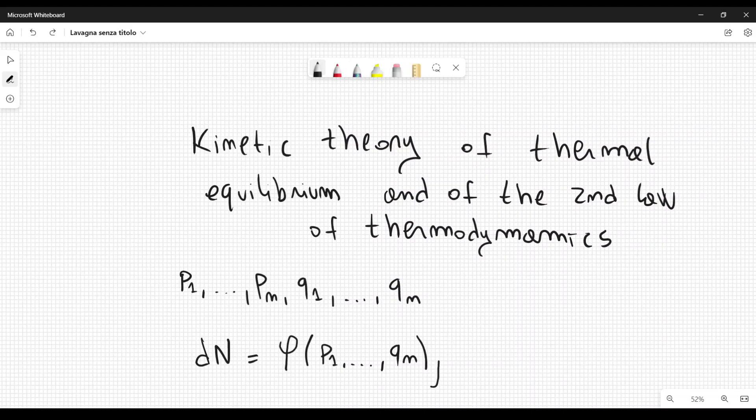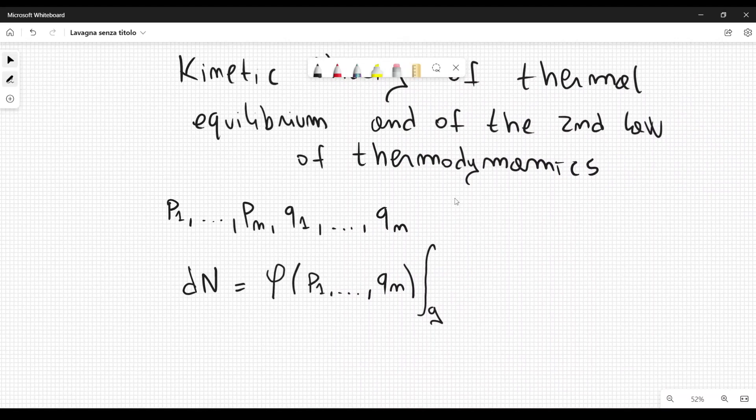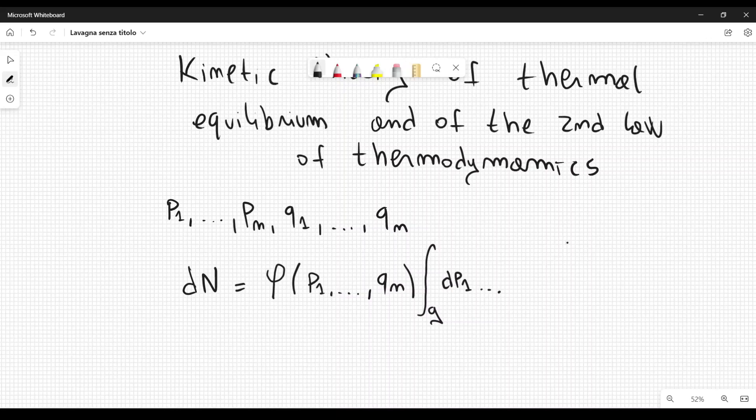Then we have the small volume, the infinitesimal volume. So I integrate over g here, but this is an infinitesimal volume. So it's an integral over an infinitesimal volume, and this is the notation that Einstein used: integral over g of dP1 dot dot dot dQn. This is the number of systems whose state variables belong to the region g at a given time.